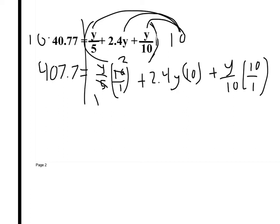What's 2 times y? 2y. 10 times 2.4, right? We just moved the decimal one time, so that becomes 24y. And then what about y divided by 10 times 10? What happens? 10s would cancel, right? So what am I left with? y. Over here, I've got 407.7.